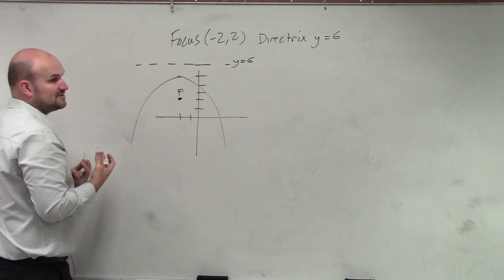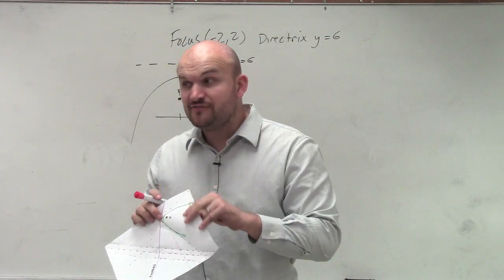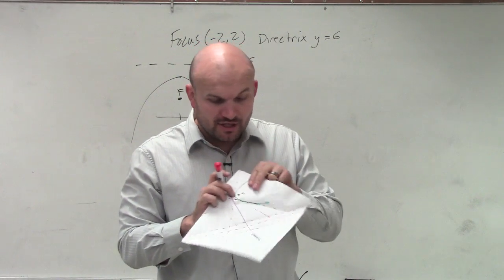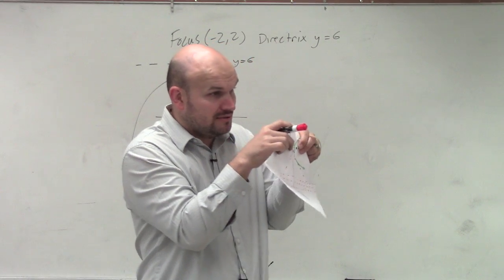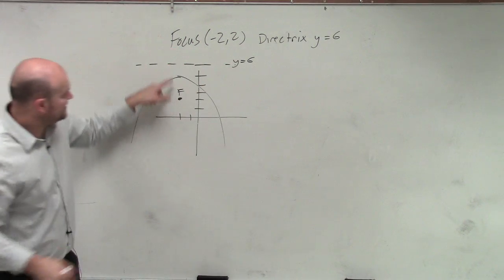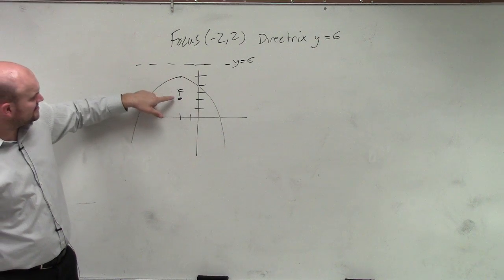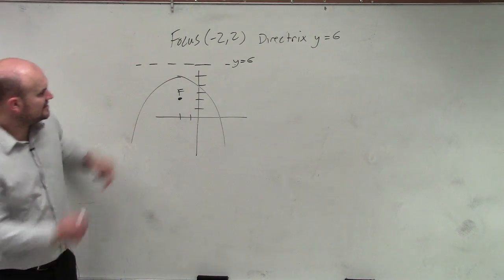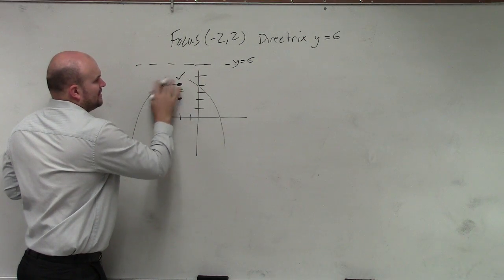So there's a couple things we also need to remember. In addition to that, your vertex, which we need to figure out because we need to know what H and K is, your vertex is in between. It's right in the middle. So can we find the middle distance between our focus and our directrix? Yeah, just let's see: 1, 2, 3, 4. Oh, it's right at 2.